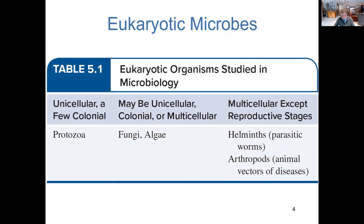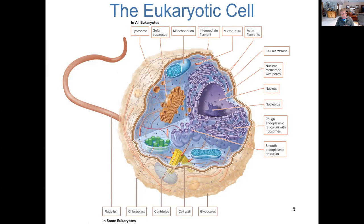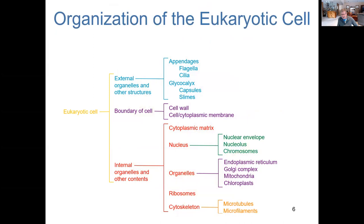Let's begin by talking about the eukaryotic cell in general. This is a composite sketch from your text — no eukaryotic cell looks exactly like this. It's an artist's depiction with all the various organelles thrown in. Note that all eukaryotes share certain common organelles, while some eukaryotes have additional ones. I'm going to spend a few minutes talking about these, though much of chapter five is review for you.